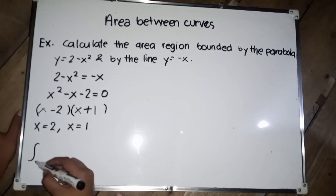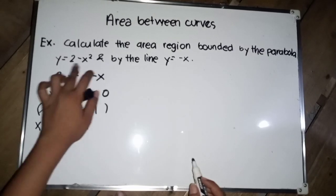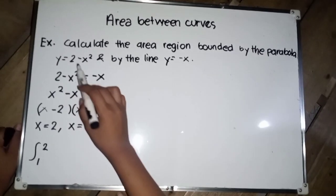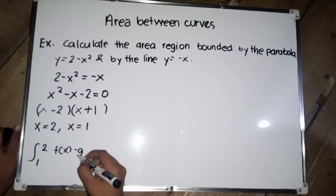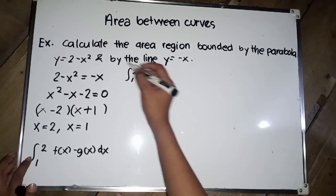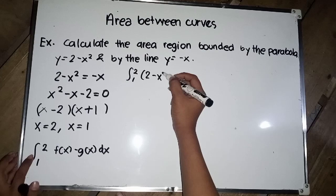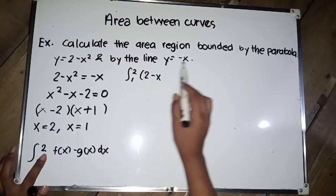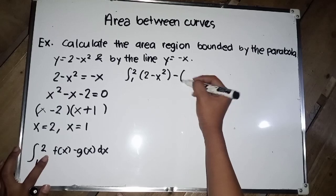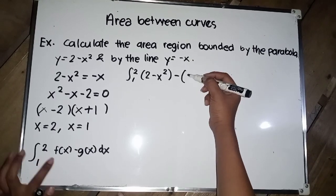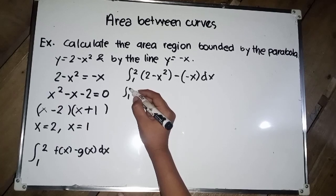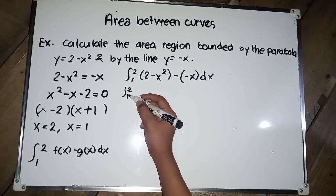The bounds are negative 1 and 2. We set up the integral of f(x) minus g(x) dx from negative 1 to 2, where f(x) = 2 minus x squared and g(x) = negative x.